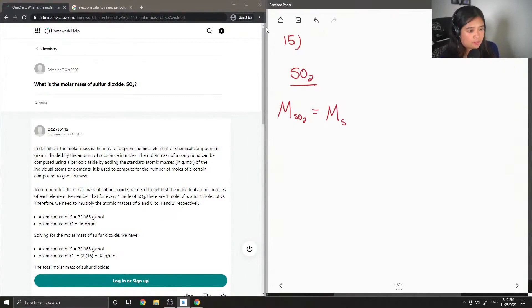So molar mass of sulfur plus two times the molar mass of oxygen, since there are two atoms of oxygen in sulfur dioxide. The molar mass of sulfur is 32.07 grams per mole and the molar mass of oxygen is 15.99 grams per mole.